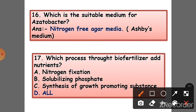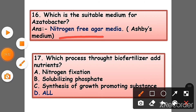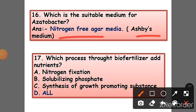Question 16: Which is a suitable medium for Azotobacter? Answer: Nitrogen-free agar medium is used as the base medium. Question 17: Through which processes do biofertilizers add nutrients? Answer: Nitrogen fixation, solubilizing phosphate, and synthesis of growth-promoting substances are the processes by which biofertilizers add nutrients to plants.